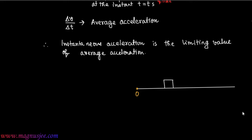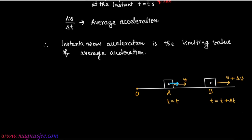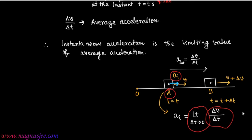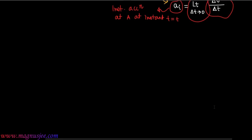Here, O is the origin, and A is the initial point from which the body starts its motion at instant t equal to t seconds. At point B, the time is t plus delta t and the velocity is v plus delta v. At point A, the instantaneous acceleration is aᵢ, equal to limit delta t tends to zero of delta v by delta t. The average acceleration between points A and B is a_avg equal to delta v by delta t. The instantaneous acceleration aᵢ at point A is the limiting value of that average acceleration during that interval of time.